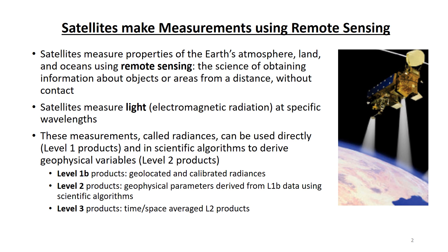Satellites measure light — electromagnetic radiation — at specific wavelengths. These measurements, called radiances, can be utilized directly to make observations about the atmosphere, land, or oceans. These types of products are called Level 1B products. They are radiances measured by the satellite that have been calibrated and geolocated.